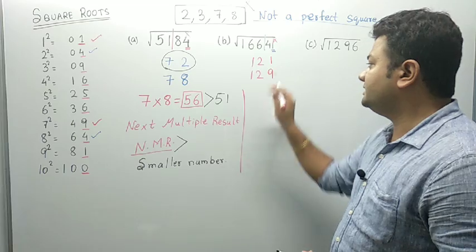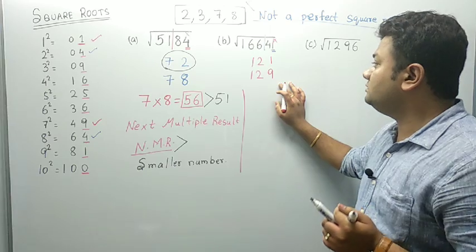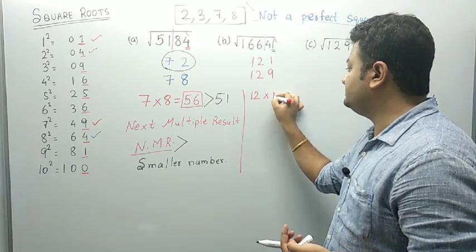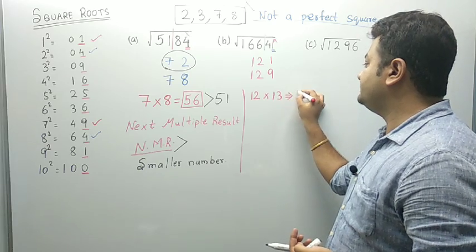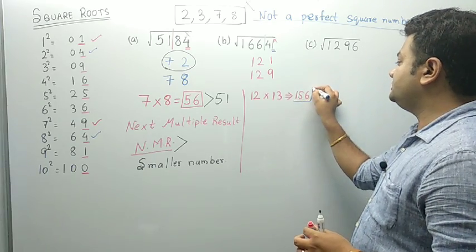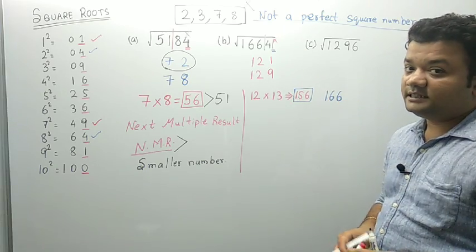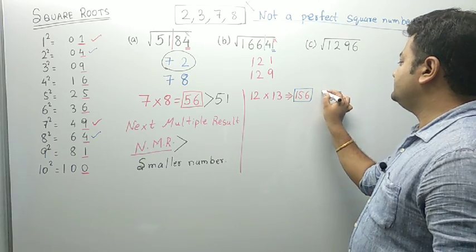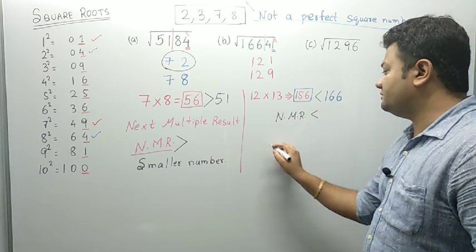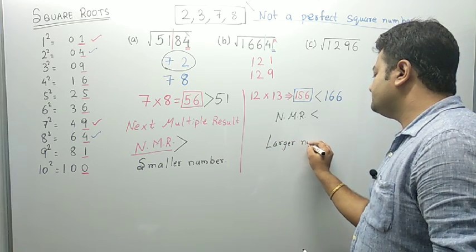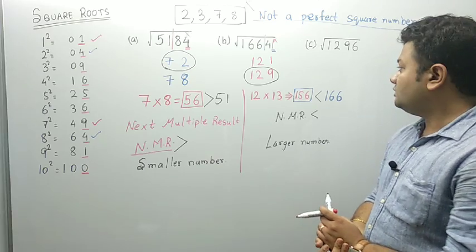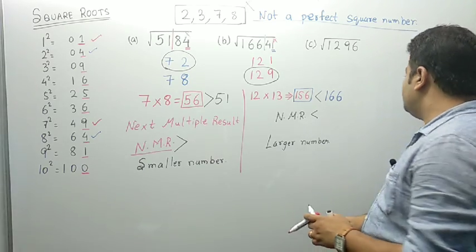Now we have to find out which of these two numbers is the correct one. What is common in both 121 and 129 is 12. So 12 is going to be multiplied by the next number, which is 13. Twelve into thirteen gives us 156. So 156 is our Next Multiple Result. This NMR is compared with the remaining number 166. In this case, we find that the NMR is smaller: 156 is less than 166. When NMR is smaller, the answer is going to be the larger number. So 129 is the required square root of 16641. Now we will move on to the next number.